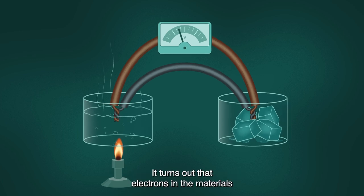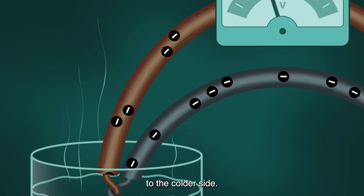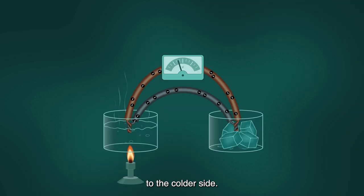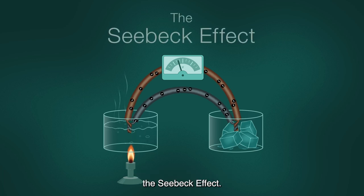It turns out that electrons in the materials flow from the heat source, or the hot side, to the colder side. We now call this process of producing electricity the Seebeck effect.